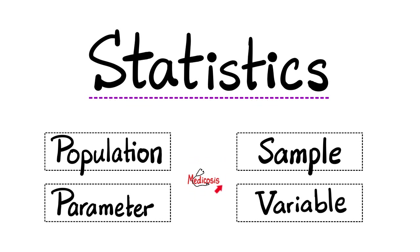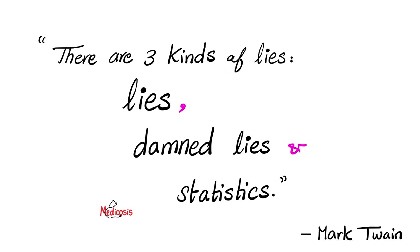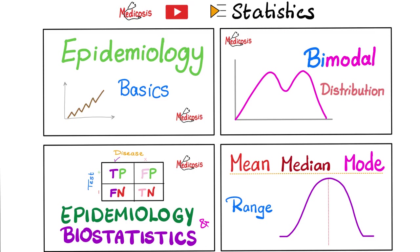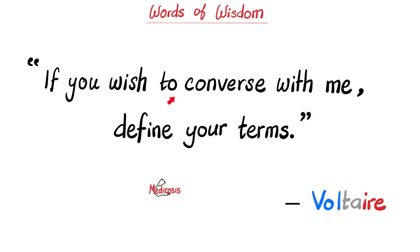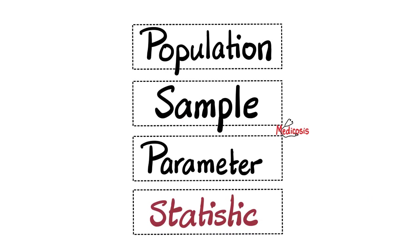Click the like button, click the subscribe button, and let's get started. There are three kinds of lies, said Mark Twain: lies, damned lies, and goddamn statistics. Welcome to my statistics playlist. Make sure to save this playlist. If you wish to converse with me, said Voltaire, define your terms. Here are the terms that we shall define today: population, sample, parameter, and a statistic.